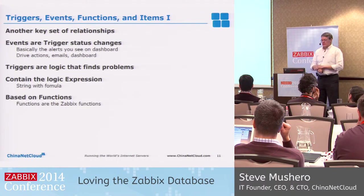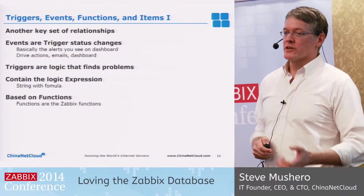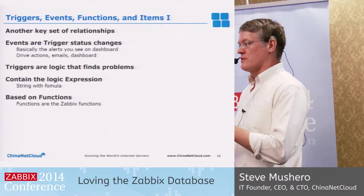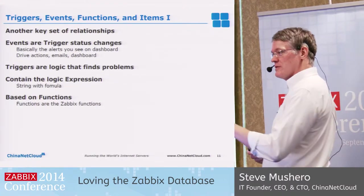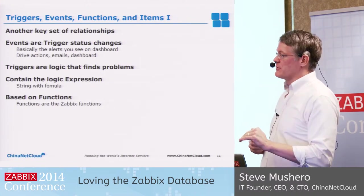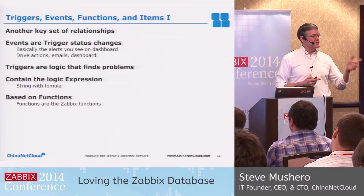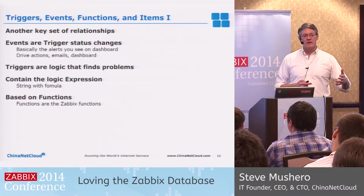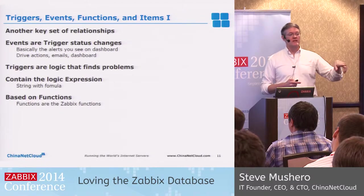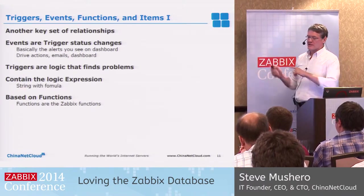Another area is triggers, events, and functions. Most people use triggers on single hosts, but you don't have to — a trigger can have logic that spans hosts. This complicates things because I can't connect a trigger directly to a host or an item; I have to use the function system. When you write a function or logic in a trigger, that creates entries in the function table which then links off to the items. Functions link to triggers and triggers link to functions. This makes it really hard because if you want to say 'this trigger is based on what host,' it creates quite complicated SQL because you have to link through the function system.